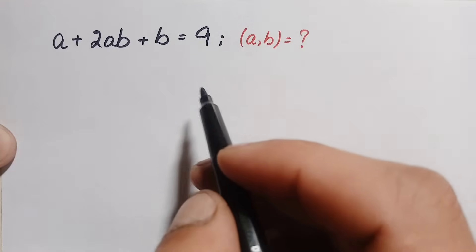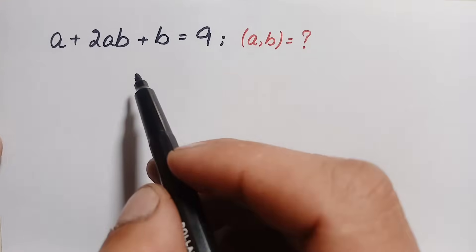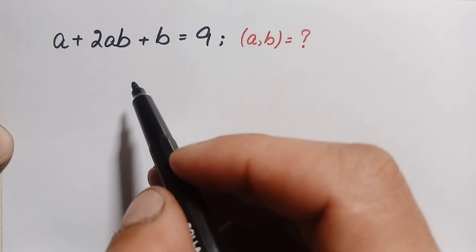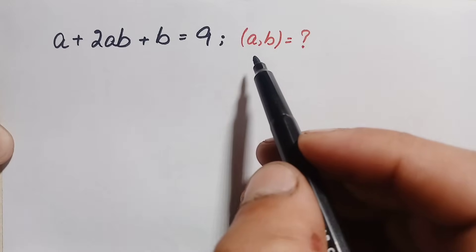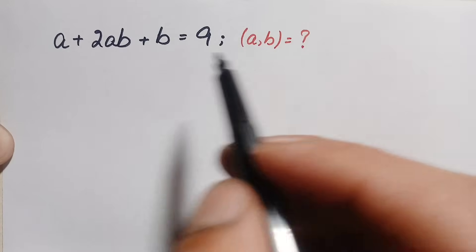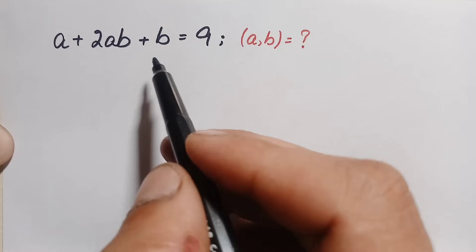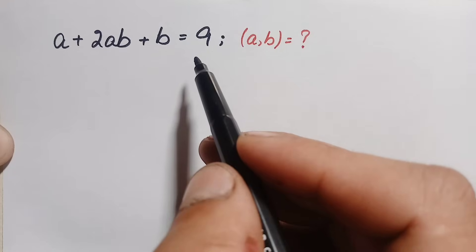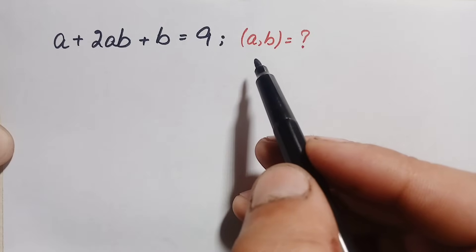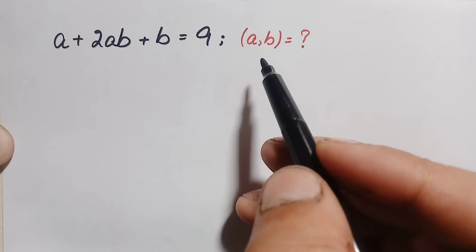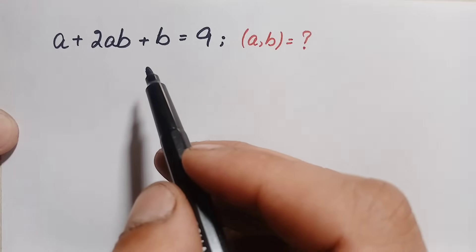Hello everyone, you are welcome. How to solve this nice algebra math problem for the values of a and b, which is (a + 2)(ab + b) = 9. So we will try to find out the value of a and b. How can we solve this algebra math problem?